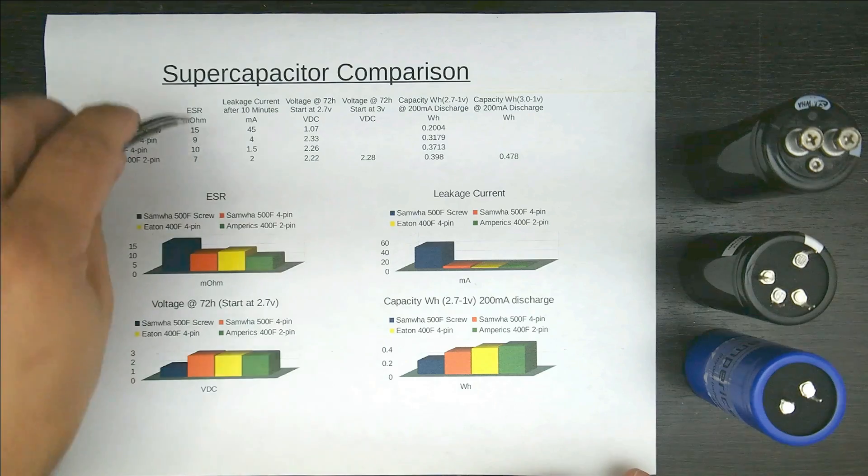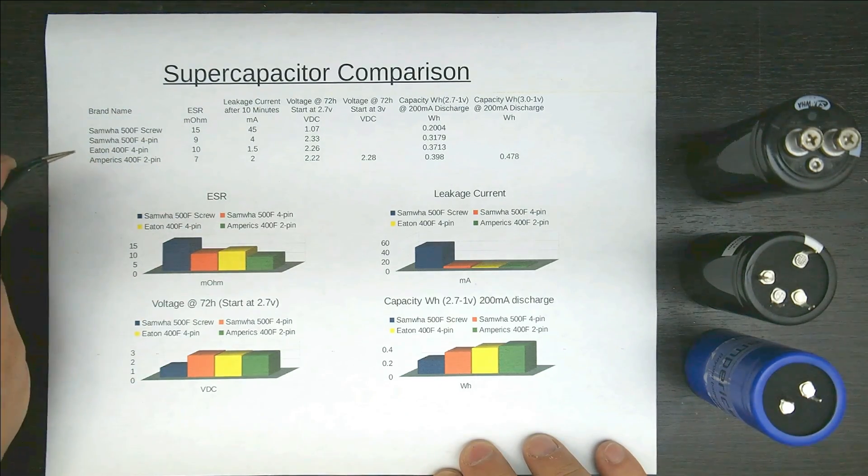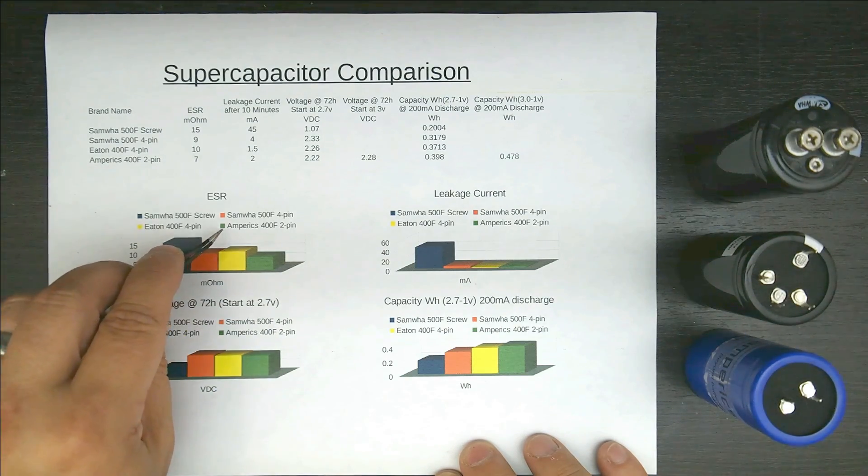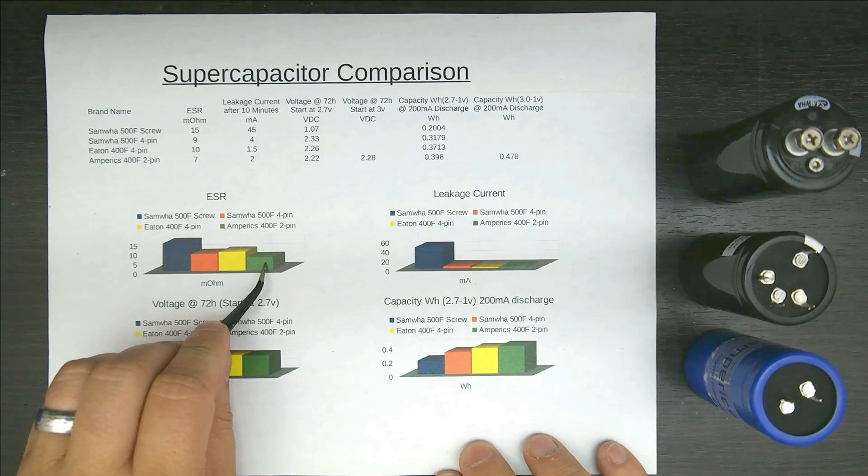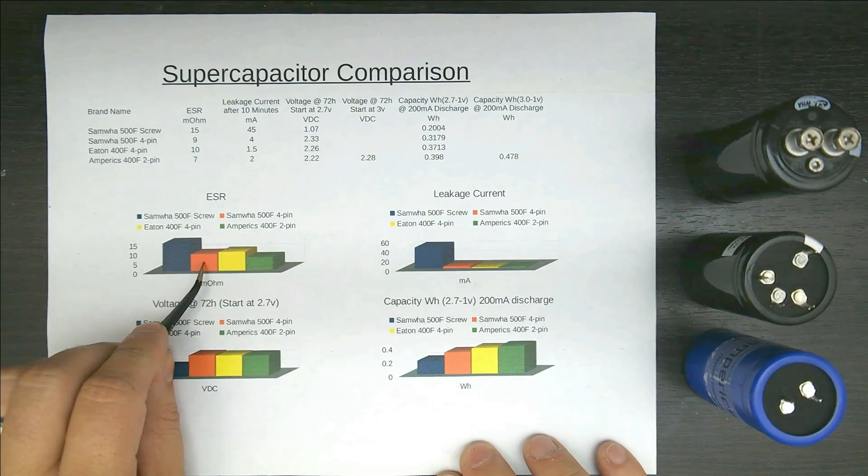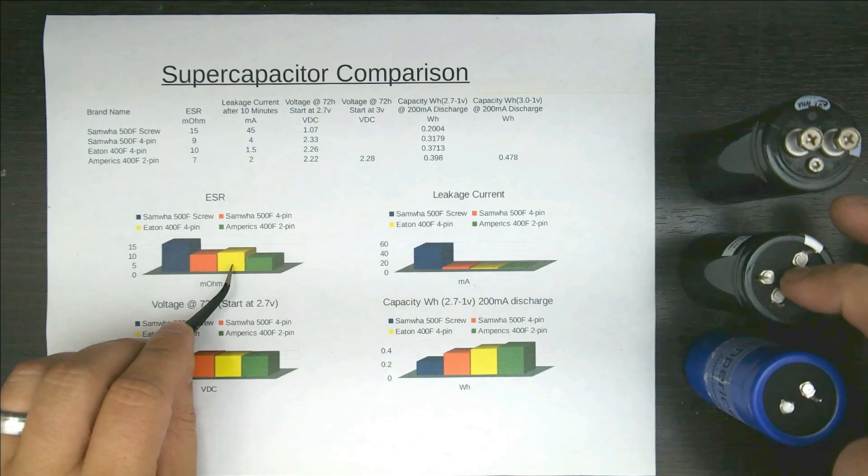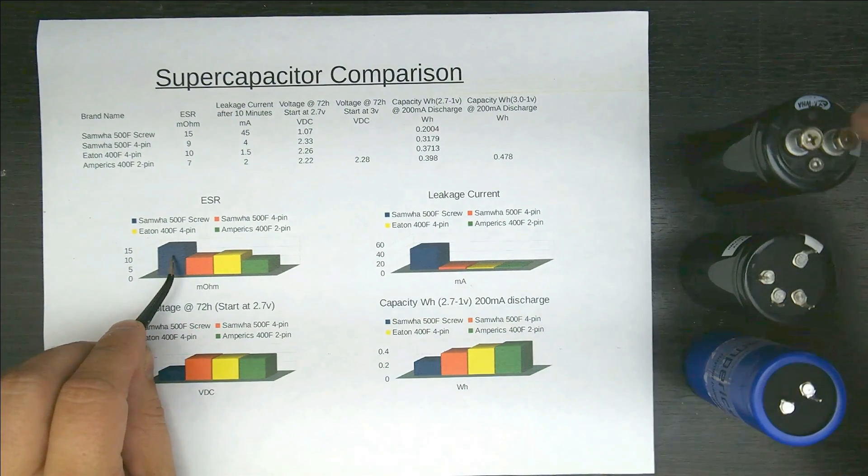Now, each graph goes for each line here. The ESR that I measured in milliohms, and you can see in here, believe it or not, the Amperics is green. Okay, they are green. They are actually just the lowest, barely in line with the 4-pin, and actually the Eton, the yellow one. They actually all came out pretty good, and here's that piece of crap cap.